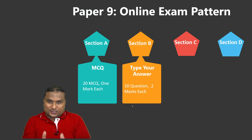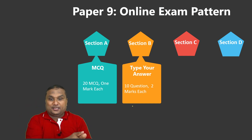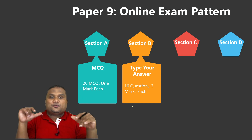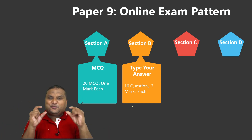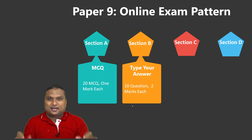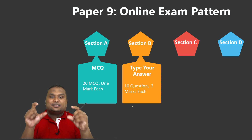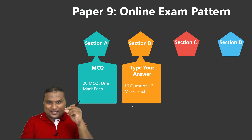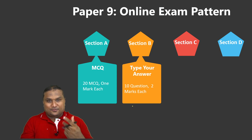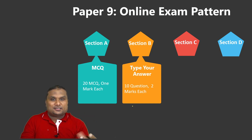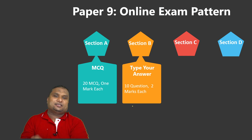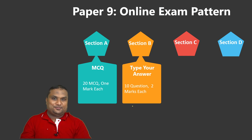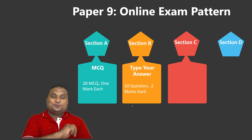Altogether, Section A and Section B combined give 20 plus 20, which is 40 marks — that means 40% of the paper comes from Sections A and B. If a student works strategically, I will show you how to score 35 plus marks in this area.